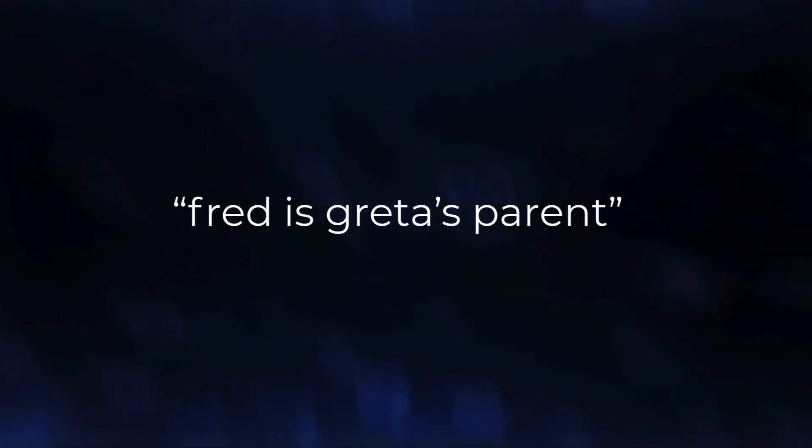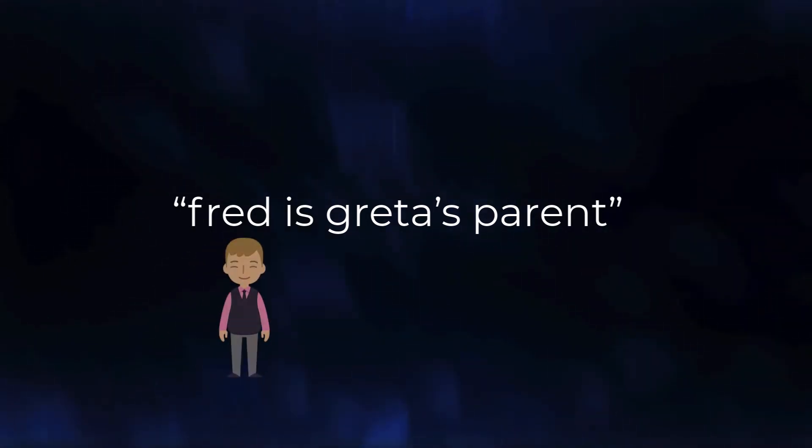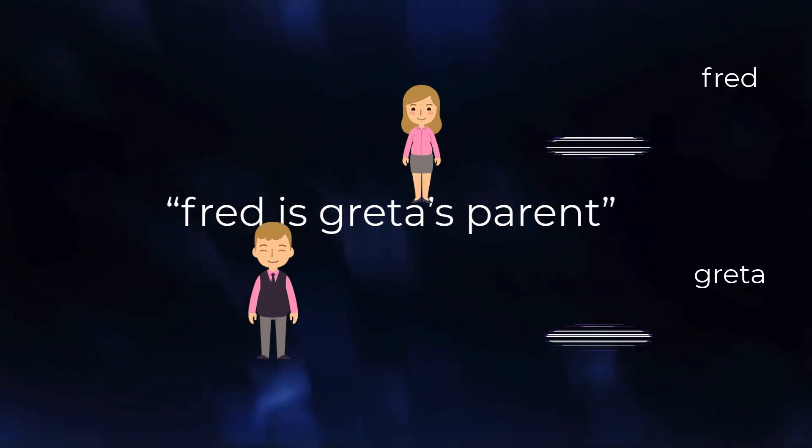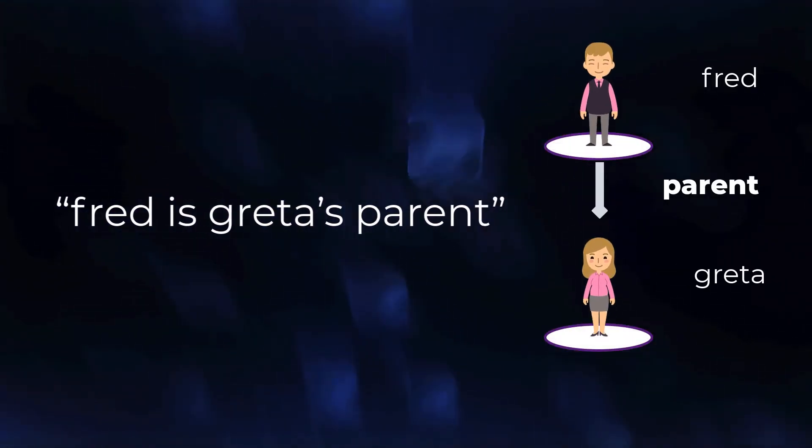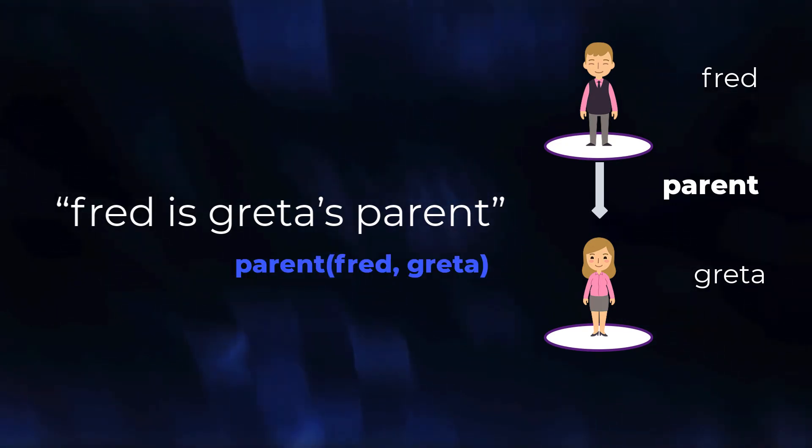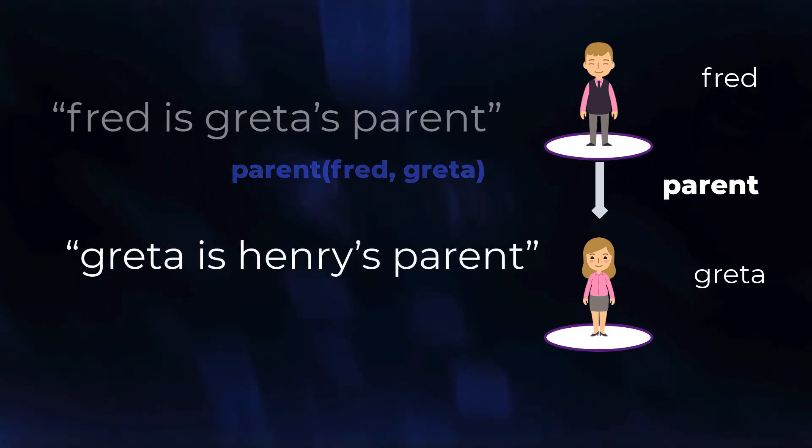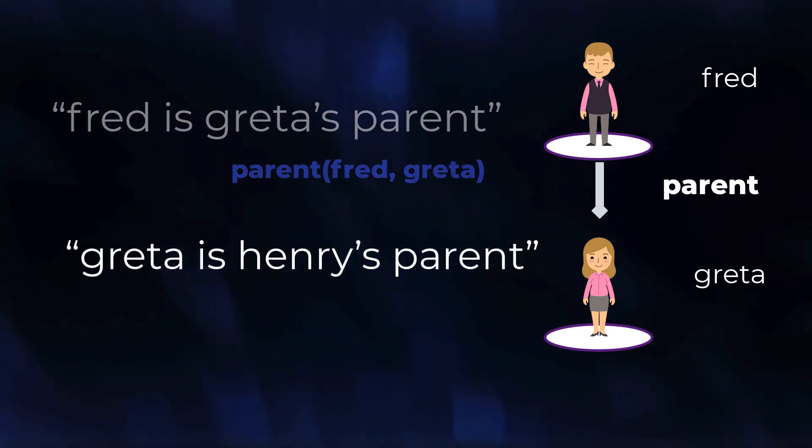Take this simple sentence about relationships. It talks about two people, Fred and Greta. A family tree would link them vertically. Prolog's version is a term, something like this. We may get information about more people. This can be treated in the same way.